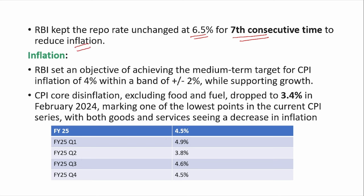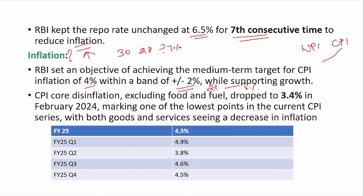Inflation is a gradual increase in prices of goods and services in the country. RBI has set an inflation target of 4% with a bandwidth of plus or minus 2%, i.e., 2% to 6%. Inflation is measured in two ways: WPI (Wholesale Price Index) from the producer/manufacturer perspective, and CPI (Consumer Price Index) from the consumer perspective. RBI uses CPI to set the inflation target.